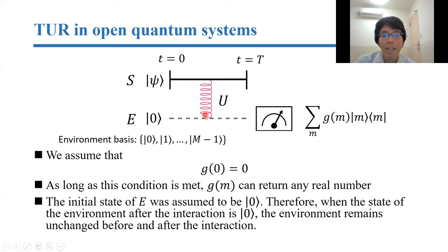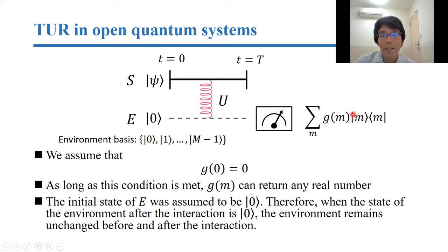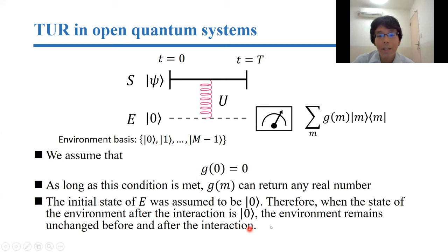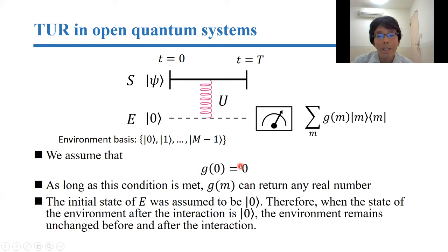Consider a simple example for a photon counting case. For the continuous measurement of photon counting, the photon is emitted from the principal system into the environment, and we measure the environment after the interaction. The state zero corresponds to the environment state after the interaction being zero, meaning the environment remains unchanged before and after the interaction — that is, no photon emission into the environment. So this condition is naturally satisfied for a counting observable.